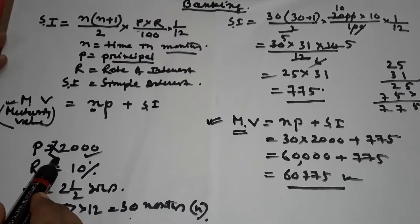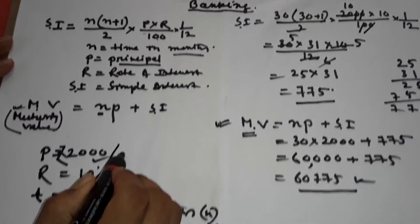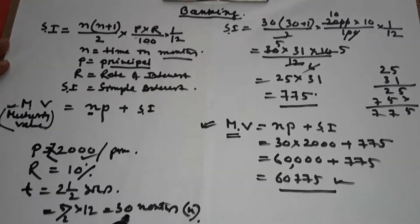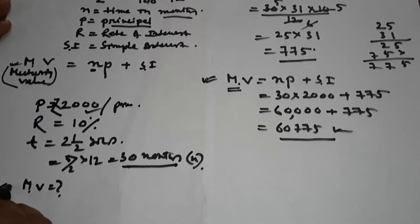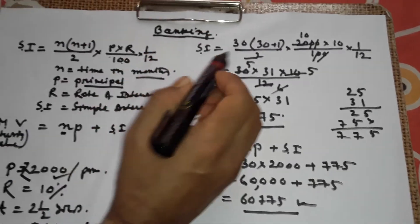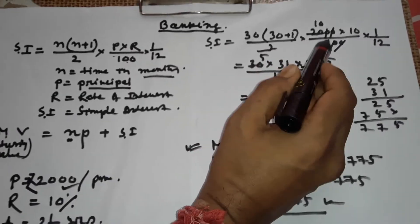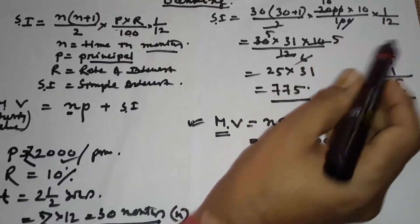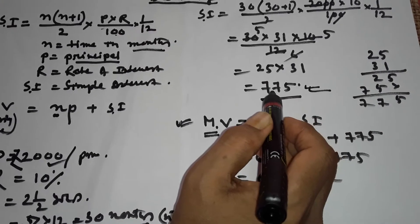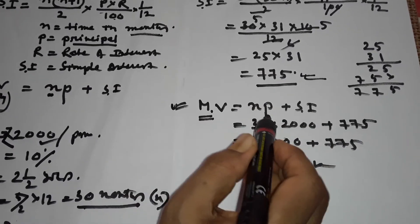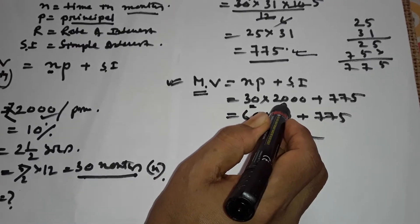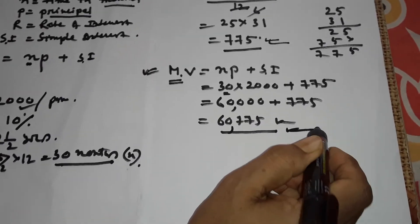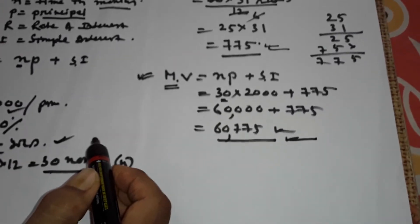Example: Someone deposits ₹2000 per month at 10% interest for 2 and 1/2 years, that is 30 months. Find the maturity value. First find SI: n = 30, 30 × 31/2 × 2000 × 10/100 × 1/12 = ₹775. Then MV = 30 × 2000 + 775 = ₹60,775 is the maturity value after two and a half years.